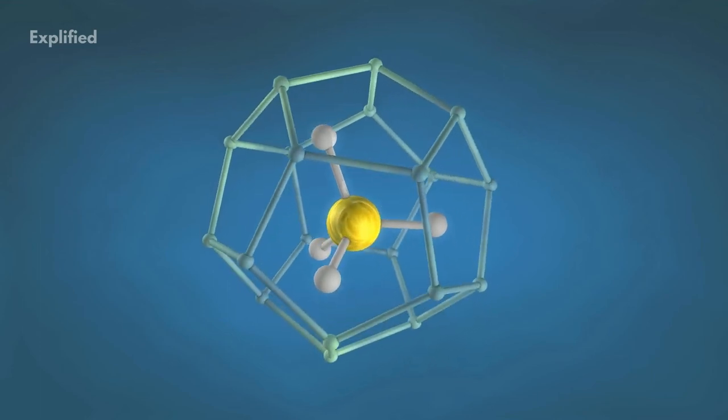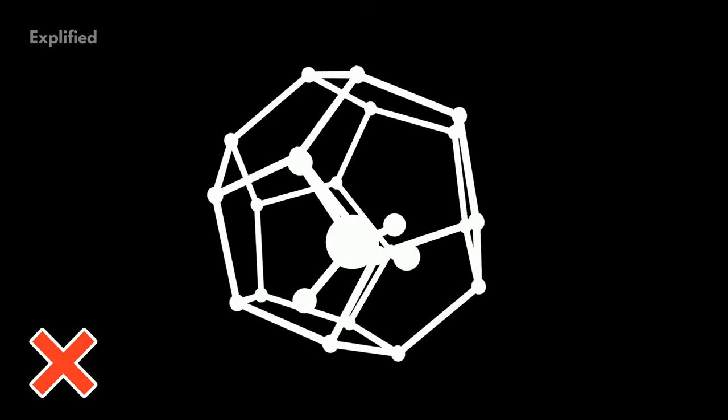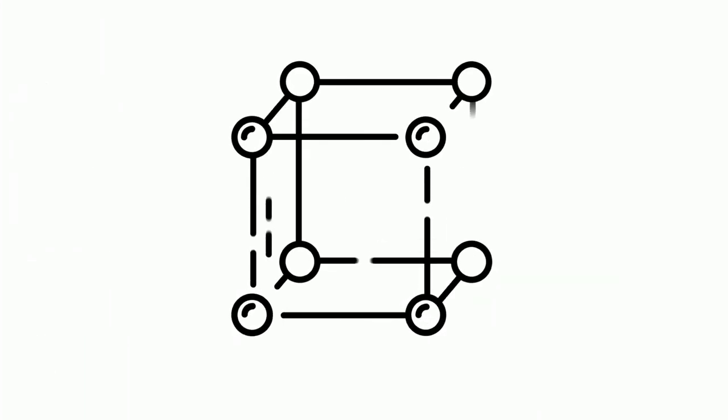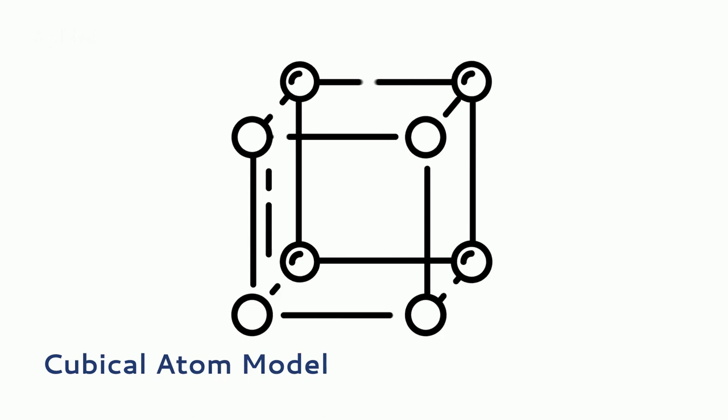He defined the term odd molecule when an electron is not shared. He included what became known as Lewis dot structures, as well as a cubical atom model.